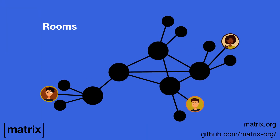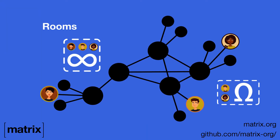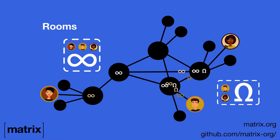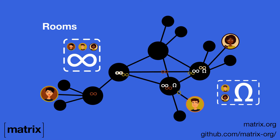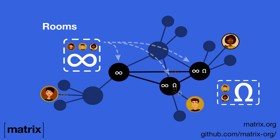Matrix uses the concept of rooms for both one-to-one and group communication. When you send a message to a room in Matrix, each user in that room is sent a copy of that message. However, different users may be located on different home servers, so the servers exchange the data on a need-to-know basis. All the servers that have a user in a room will now have a copy of the conversation in that room.